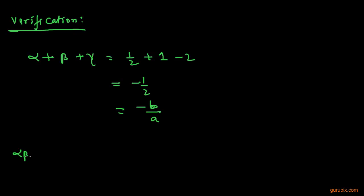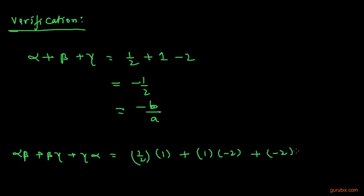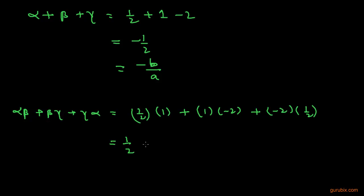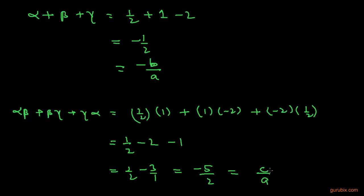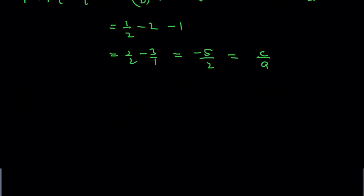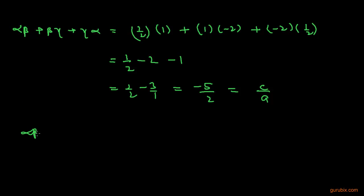Now we find αβ + βγ + γα = (1/2)(1) + (1)(-2) + (-2)(1/2) = 1/2 - 2 - 1 = 1/2 - 3 = -5/2. This equals c/a, where c is the coefficient of x and a is the coefficient of x³. So this relationship is also verified.